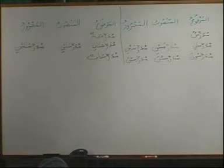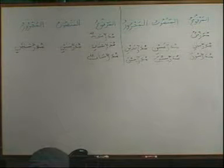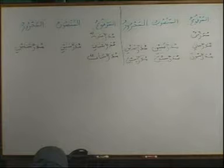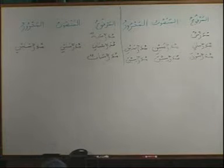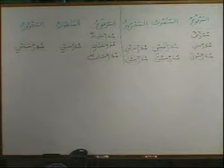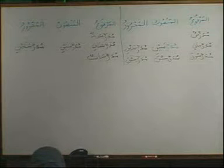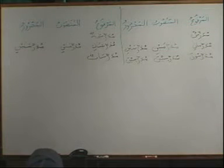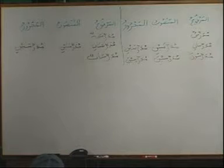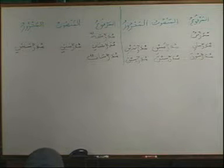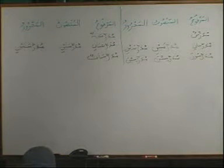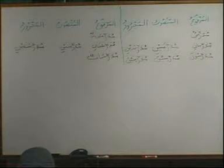Then we have the Jama: Mudarrisuna. The sign of Marfu in Jama is Waw. Then Mudarrisina and Mudarrisina for Mansoob and Majroor — the sign is Ya. Now we come to the feminine plural form, Mudarrisatun. I can see the Tanwin Dhamma there. If I put Al, it will become Al-Mudarrisatu. Now what will happen in the Mansoob form?